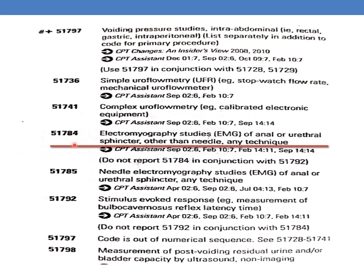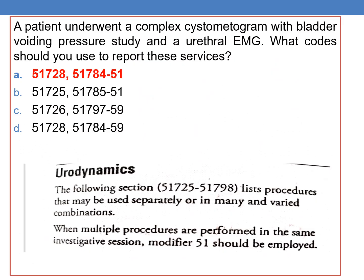So 51784 is the EMG CPT. Along with the previous CPT 51728, you need to add 51784. Coming back to the question: a patient underwent a complex cystometrogram with bladder voiding pressure studies and urethral EMG. The answer is 51728 along with 51784, with modifier 51 appended. Why is modifier 51 used?